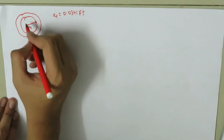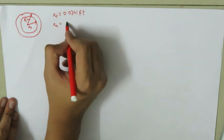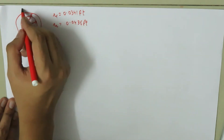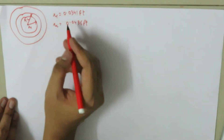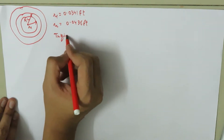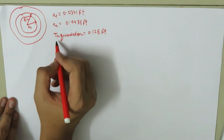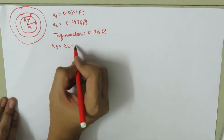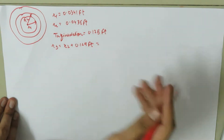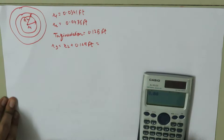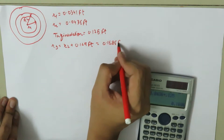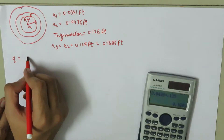Let's draw the diagram. The pipe has inside radius r1 = 0.0341 feet and outside radius r2 = 0.0436 feet. The thickness of insulation is 0.125 feet, so r3 = r2 + 0.125 = 0.0436 + 0.125 = 0.1686 feet.